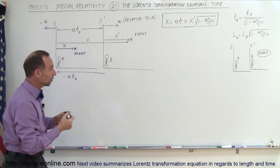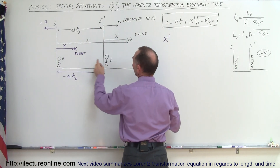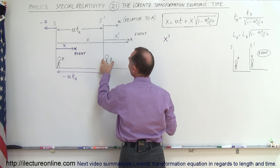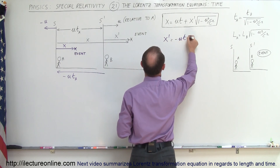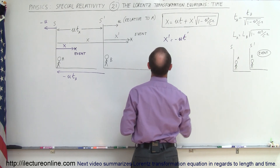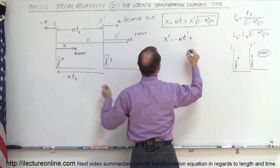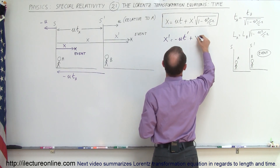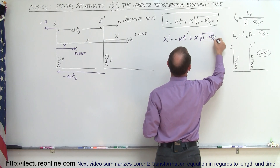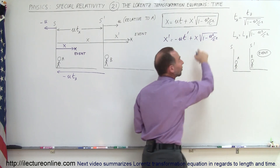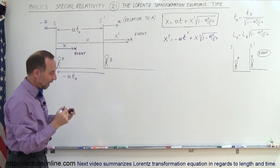We can write that equation as: x prime, the distance to the event as seen by B, equals minus u times t prime — the time as seen by B — plus the distance as seen by A, which is x times the square root of 1 minus u squared divided by c squared. We don't need to change the sign because it's u squared, so the negative u quantity squared gives us that same result.